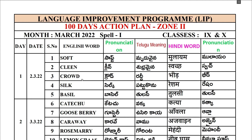3rd one: Crowd, C-R-O-W-D. Telugu: Raddi. Hindi: Bheed. 4th one: Silk, S-I-L-K. Silk. Telugu: Pattukonu. Hindi: Resham.